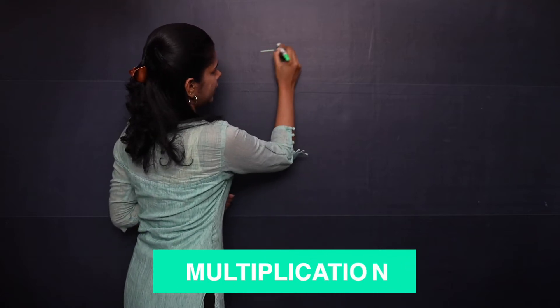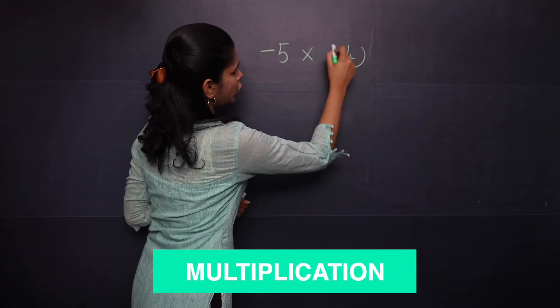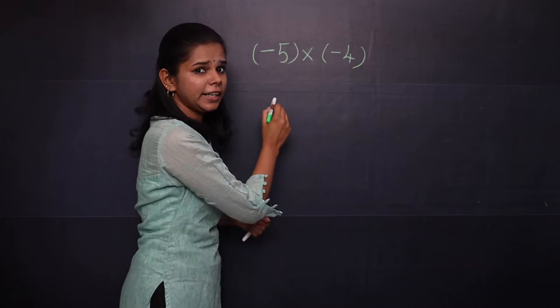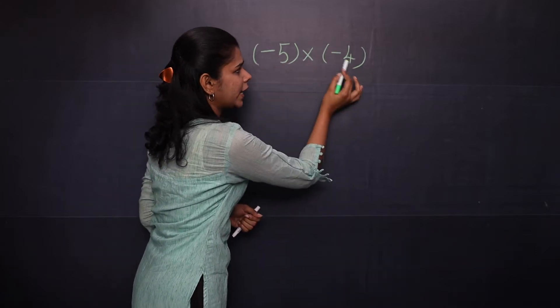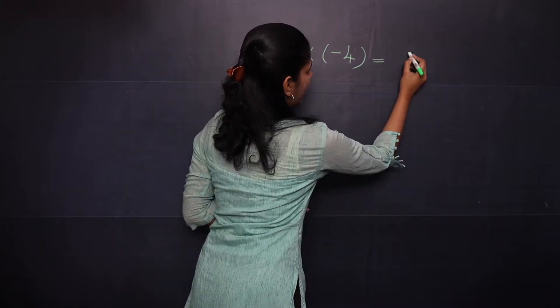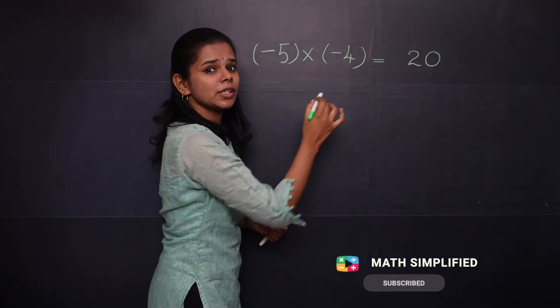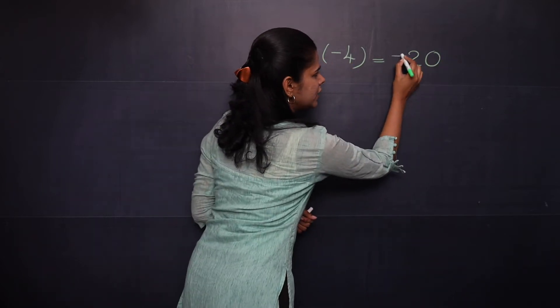When you are going to multiply negative 5 into negative 4, here you have the sign negative and you have same sign on both numbers. So the answer is 20. The same sign, so the answer will be positive 20.